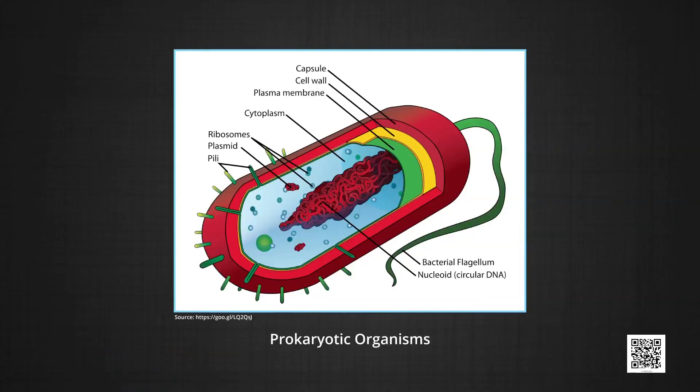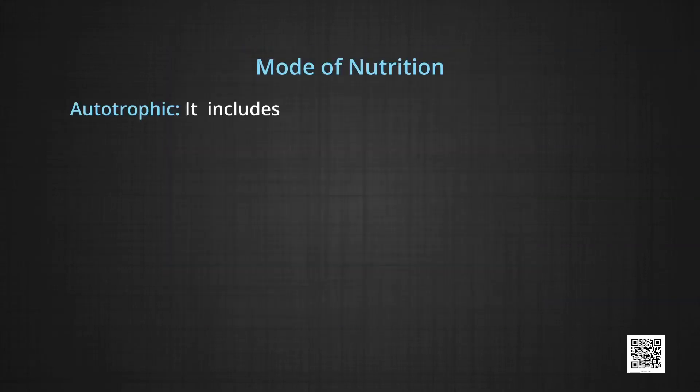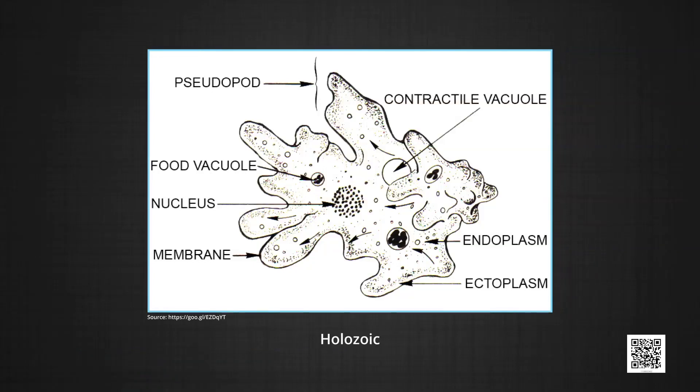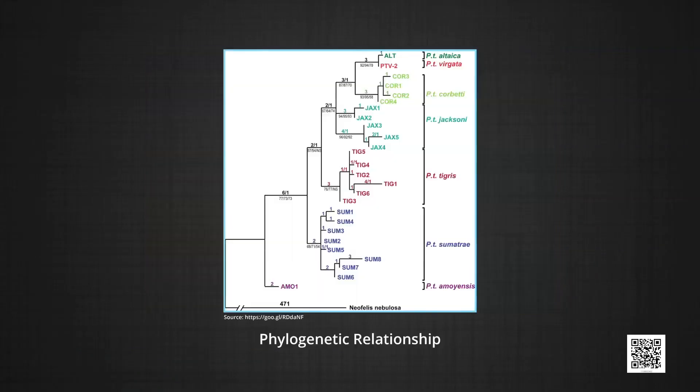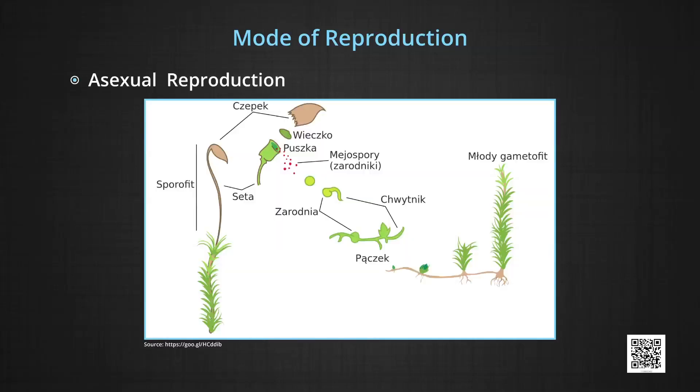Five kingdom system of classification was done on the following criteria: structure of cells, including prokaryotic and eukaryotic organisms; organization of cells, including unicellular and multicellular; mode of nutrition, including autotrophic such as chemosynthetic and photosynthetic, and heterotrophic which includes holozoic and saprotrophic; phylogenetic relationship from the study of fossils; and mode of reproduction including asexual and sexual reproduction.